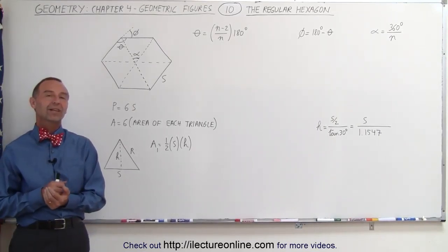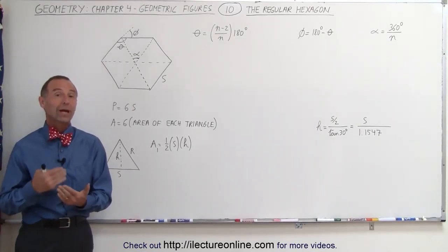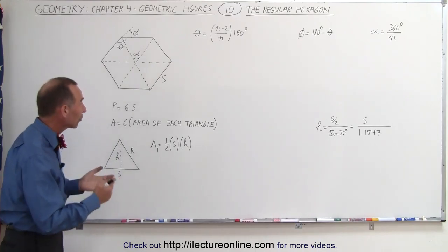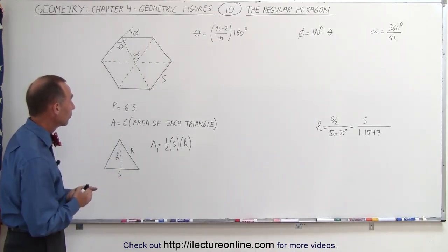Welcome to ElectronLine. Now let's take a look at the hexagon, the regular hexagon, which means all six sides are of equal length.